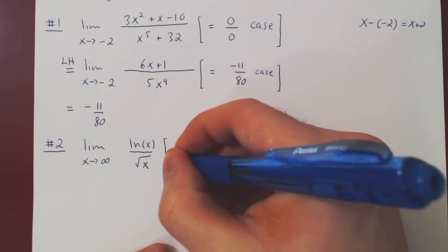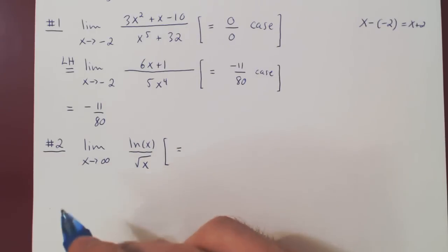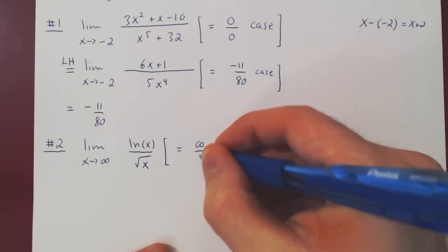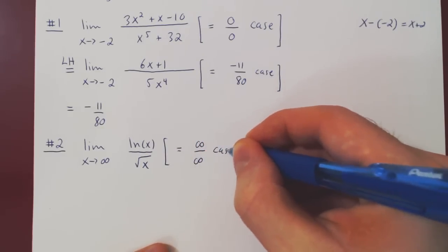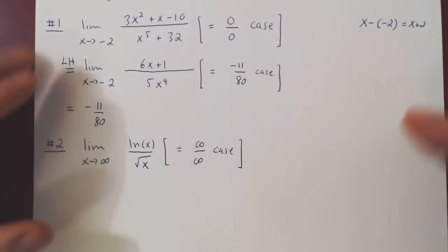And we'll consider quite simply the ratio of ln of x over root of x. Again, we look at our case. We know that as x goes to infinity, both ln of x and root of x go to infinity, so we have here an infinity over infinity case. And so we can apply L'Hopital's rule.